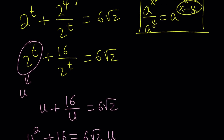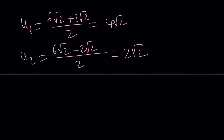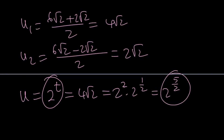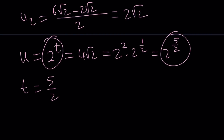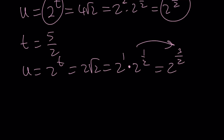We're going to back-substitute twice — first to t, then to x. Since u equals 2^t, the first value 4√2 = 2² × 2^(1/2) = 2^(5/2), which means t = 5/2. The second u value 2√2 = 2^1 × 2^(1/2) = 2^(3/2), giving us t = 3/2. So we have two t values.